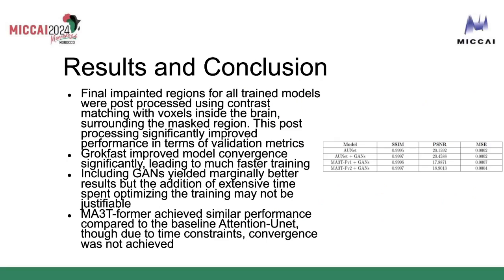Quickly summarizing the results: the inpainted regions for all trained models were post-processed using contrast matching within the voxels inside the brain immediately surrounding the mass region. The depth of this was also a hyperparameter that we had to optimize. This post-processing significantly improved performance, as expected, in terms of the validation metrics.